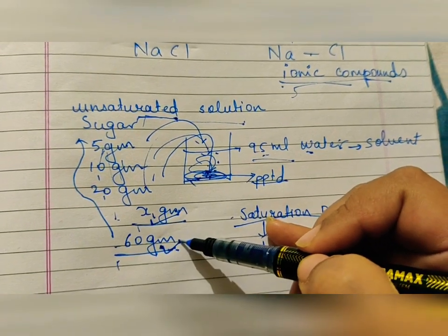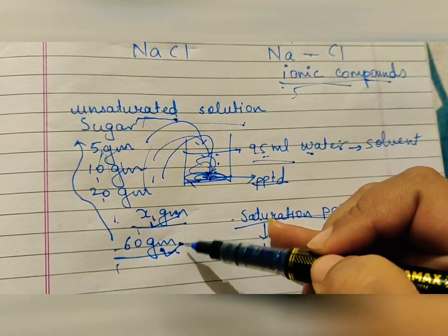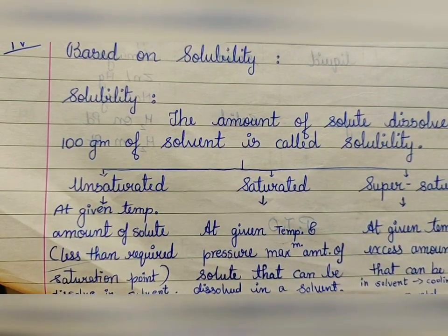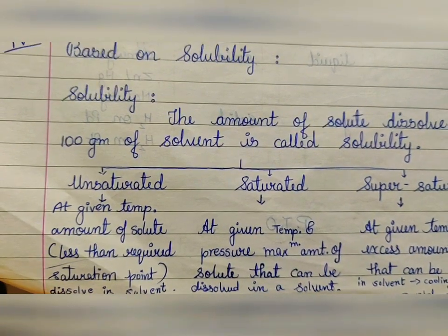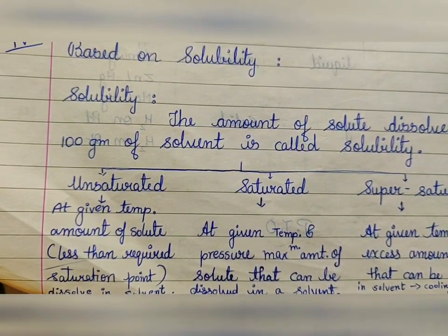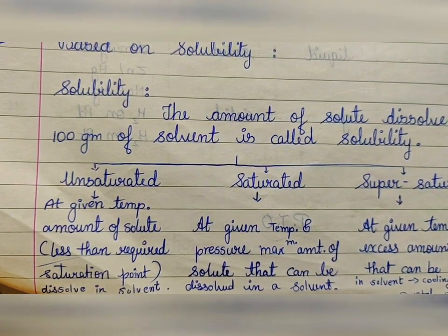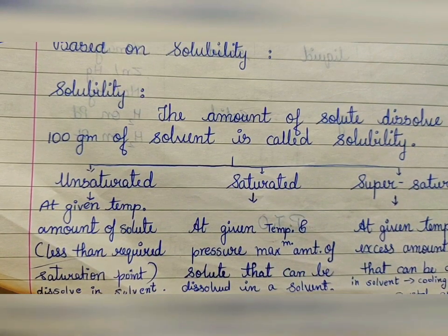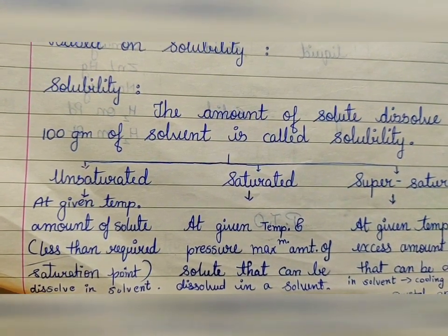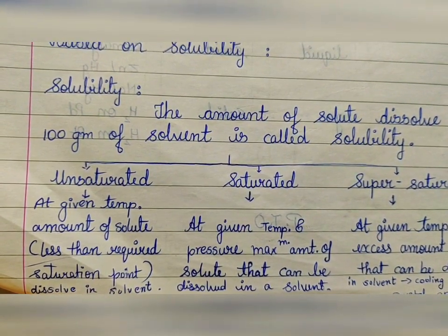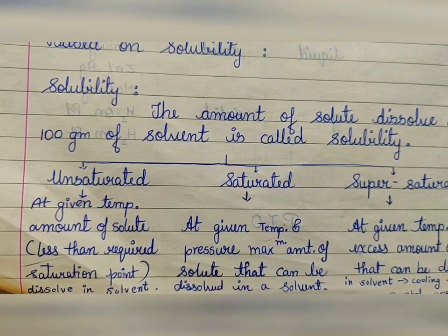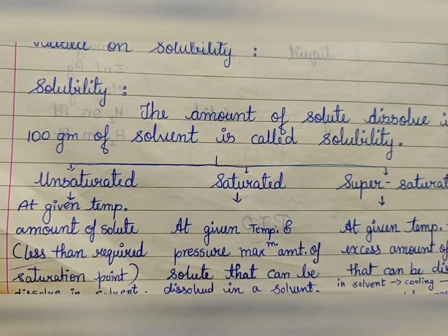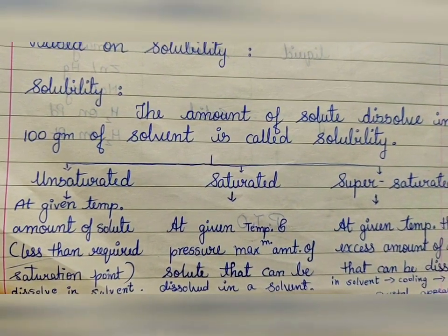The unsaturated solution contains less than the maximum amount of solute that can be dissolved — maximum here being 60 grams. A saturated solution is one where the maximum amount of solute is dissolved at a given temperature and pressure — that is, at the saturation point.